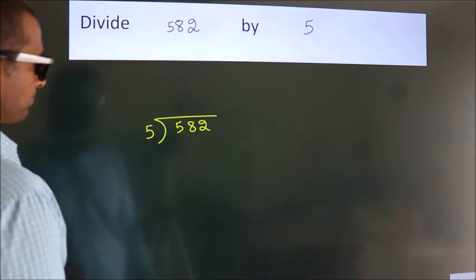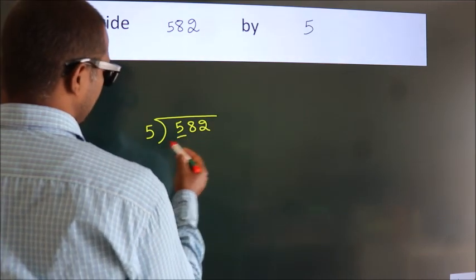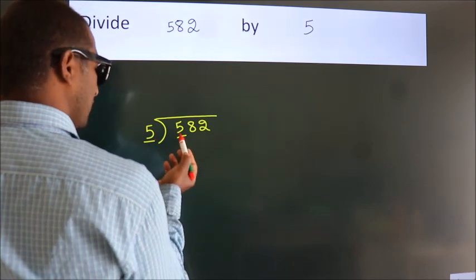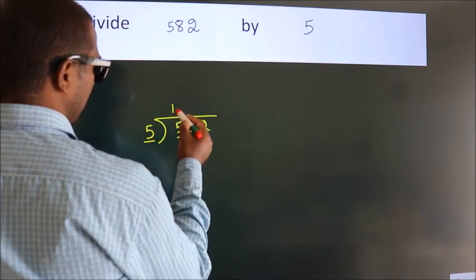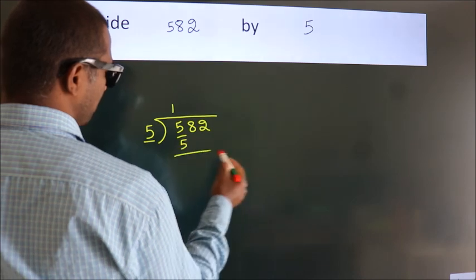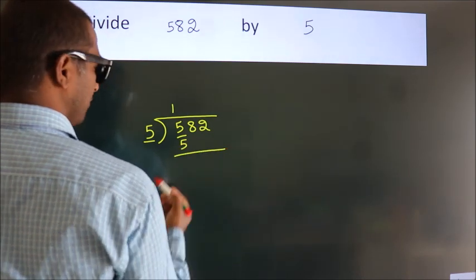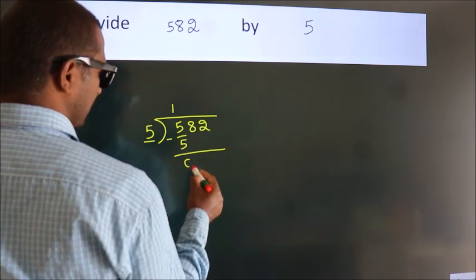Next, here we have 5, here 5. When do we get 5? In the 5 table, 5 once is 5. Now we subtract, we get 0.